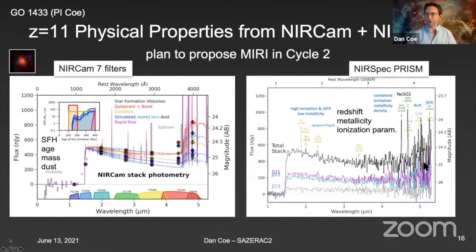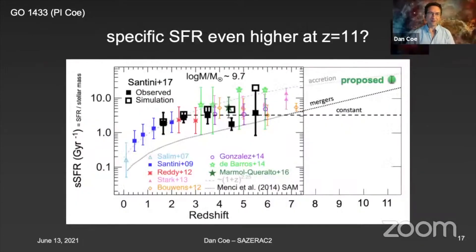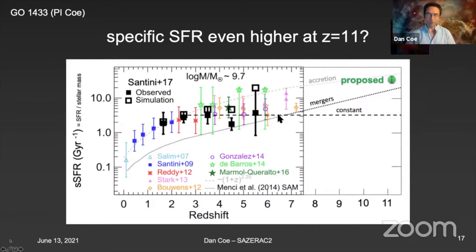Here's an example of what we hope to see with the NIRCam and NIRSpec prism. The lines we hope to see will give us the redshift and some constraints on metallicity and ionization parameter. There has been a lot of uncertainty at redshifts 4, 5, 6, 7, 8 for stellar mass measurements due to emission line contamination. We can do that a lot more cleanly with JWST. And at Redshift 11, we might see even higher specific star formation rates — that's something we'll measure very cleanly.